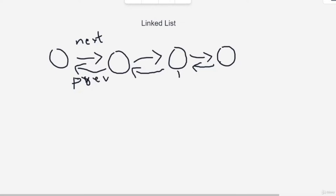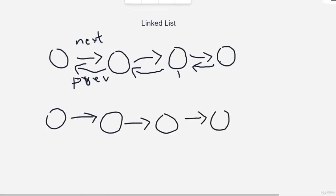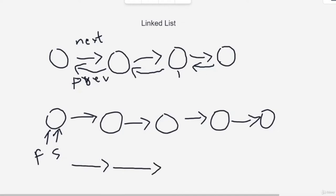Let's also talk about fast and slow pointers. While solving some questions, you can use two pointers — one named 'fast' and one 'slow' — both starting at the head. You move the fast pointer a couple of times in one iteration and the slow pointer only once. So every time slow moves one step, fast moves two steps. While fast is here, slow will be here; then slow comes here and fast is there; and when slow comes to the next position, fast is at the end of the linked list.